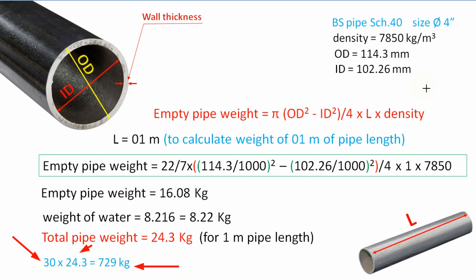It is very simple to calculate the total weight of the pipe. First, calculate the total weight for 1 meter length of the pipe. Then multiply it by the actual length of the pipe.